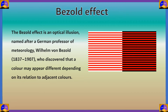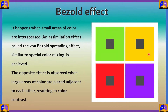This happens when small areas of color are interspersed and a simulation effect called the von Bezold spreading effect — similar to spatial color mixing — is achieved. So color is getting mixed inside our head, and therefore we see different colors even though the colors are exactly the same.